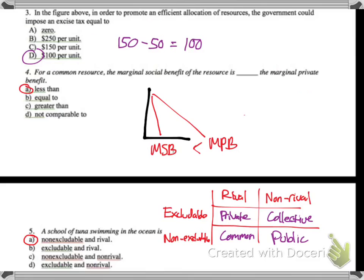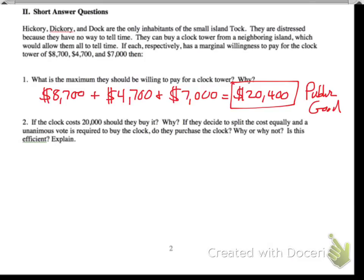So again, going back to the chart here. Public good, it's non-rival, non-excludable. Okay, so now if the clock costs $20,000, should they buy it? Why or why not? Well, yes, because their maximum is $20,400, and they just pretty much got $400 off. So since this is greater than what they originally were going to pay, it's like saying I'm willing to pay $50 for something, and then they sell it to me for $45. I just got $5 off. I'm happy. So definitely going to want to buy it, because the maximum that they're willing to pay is greater than what they're getting it sold for.